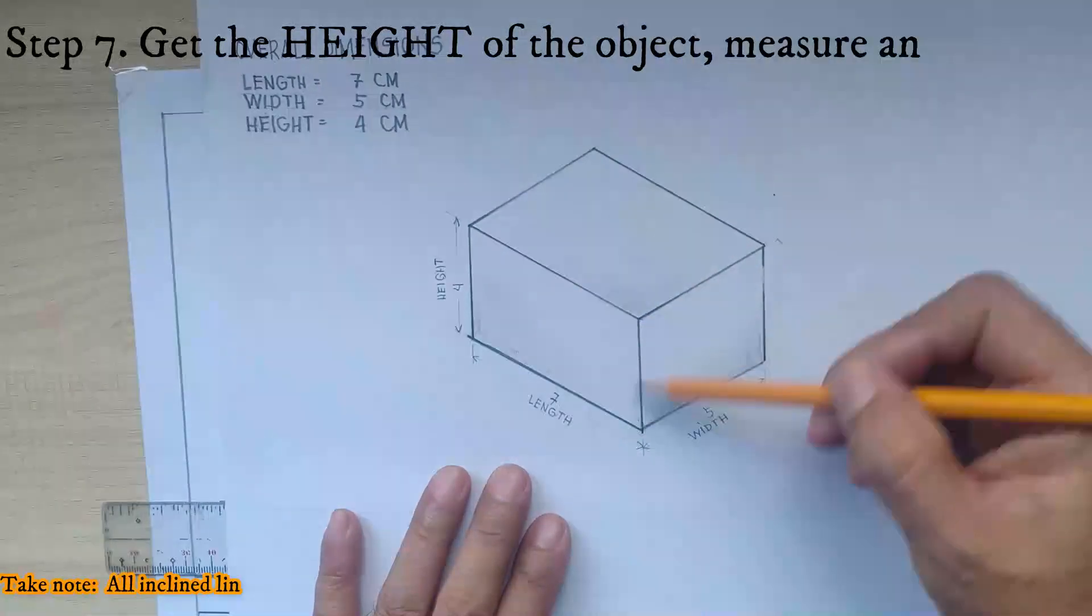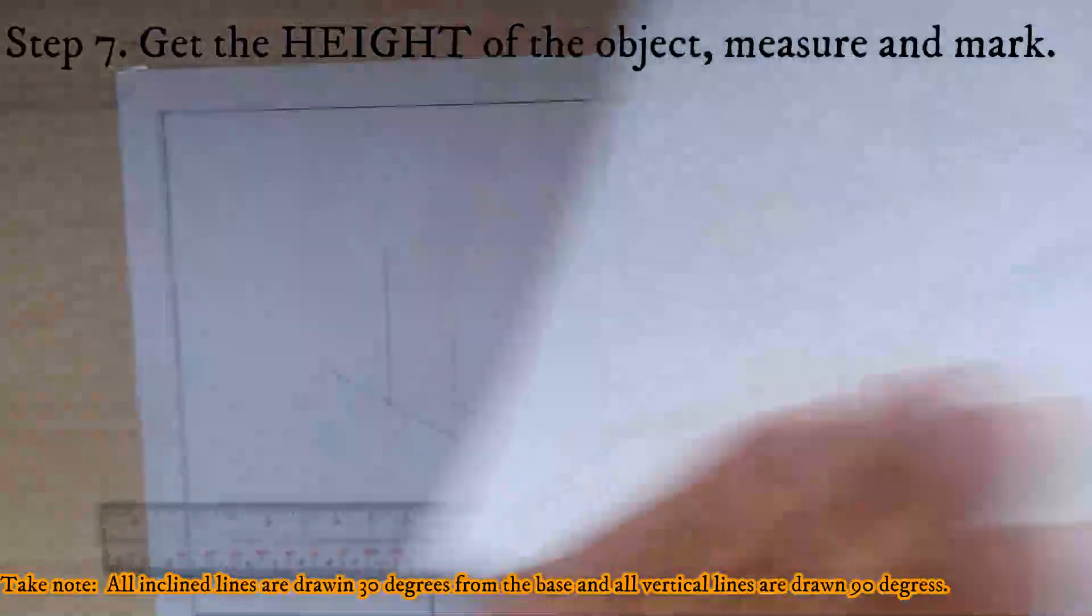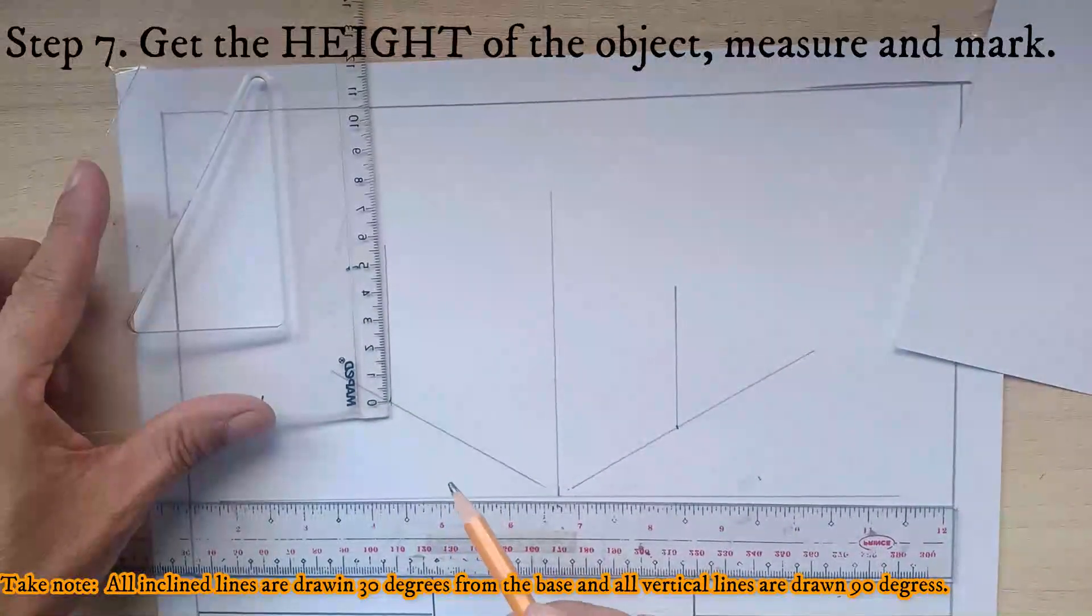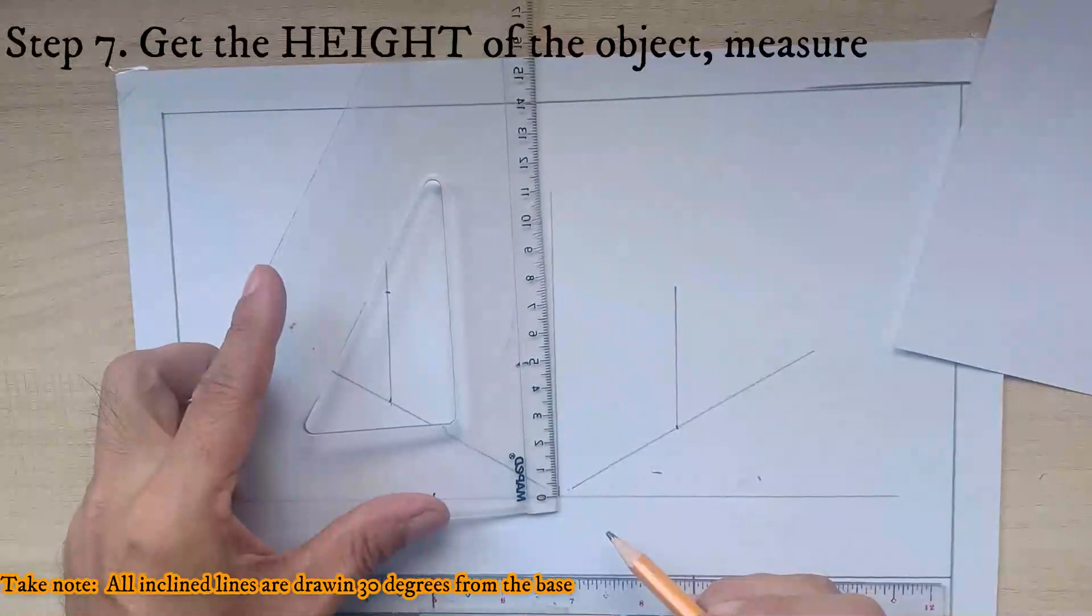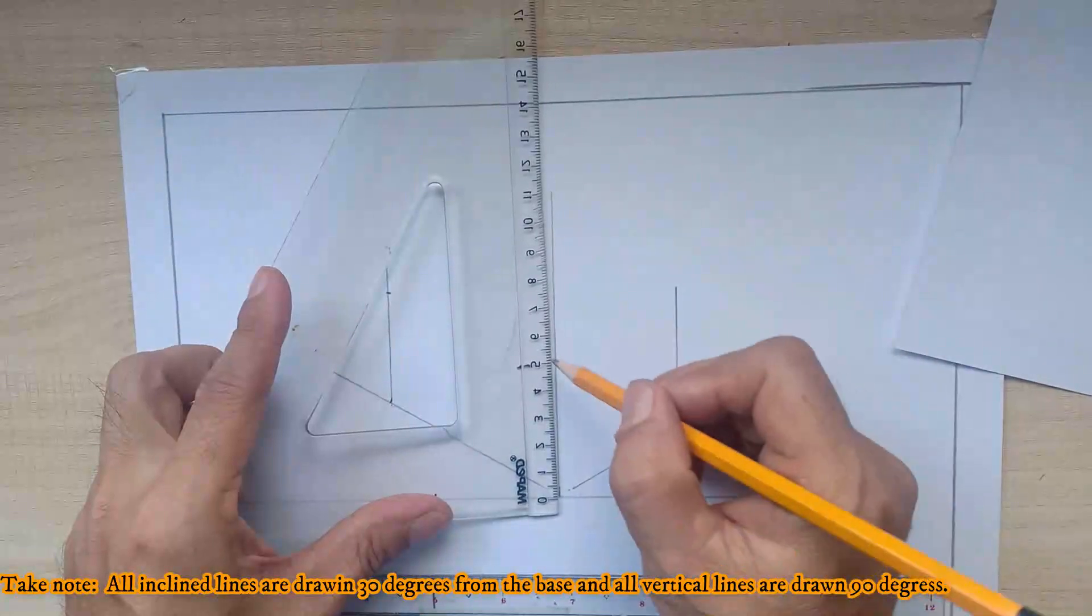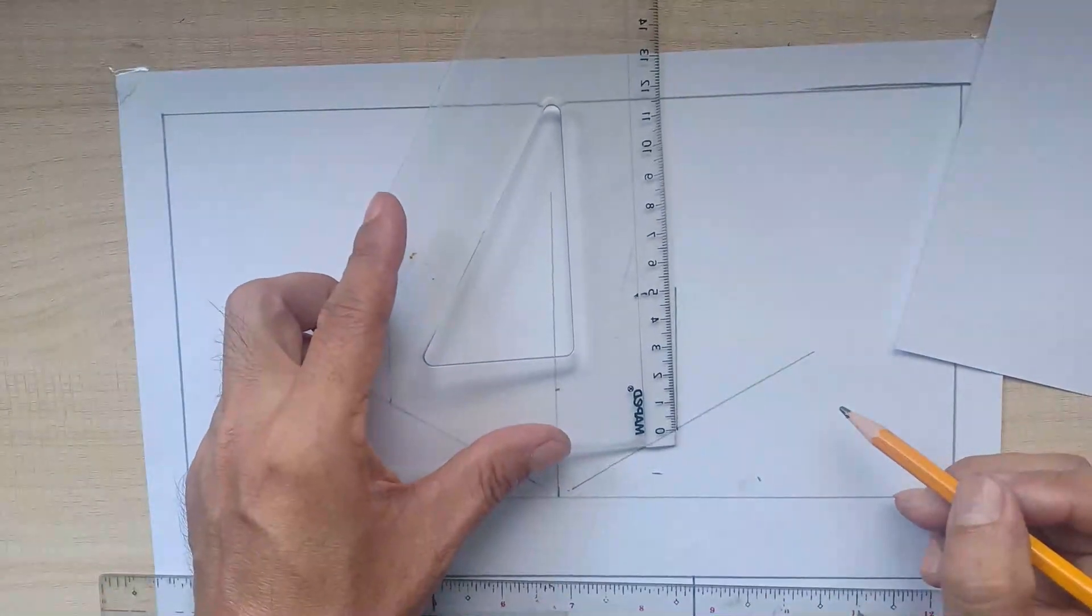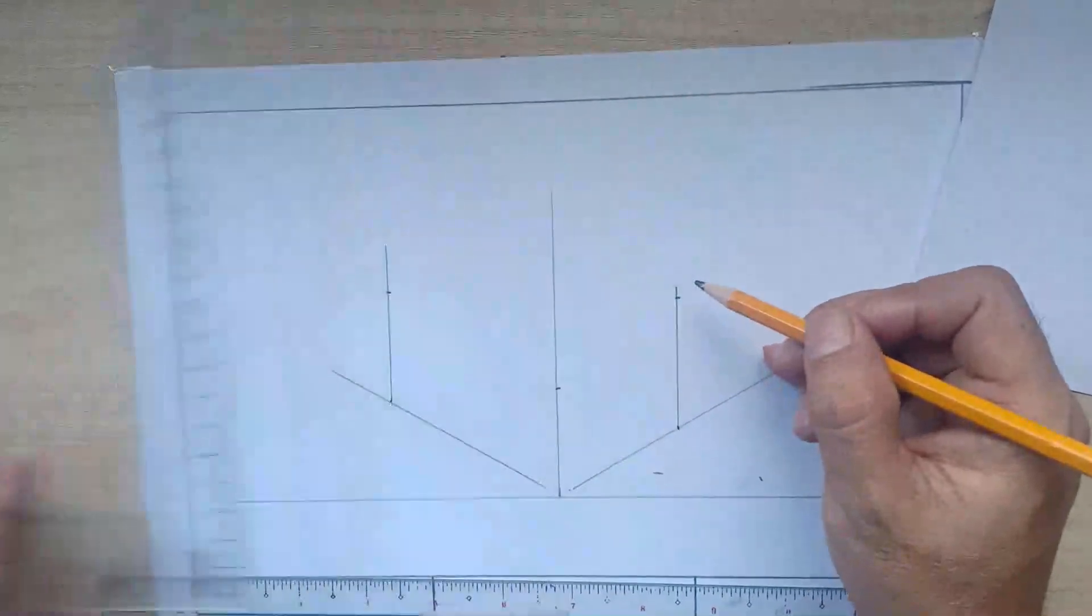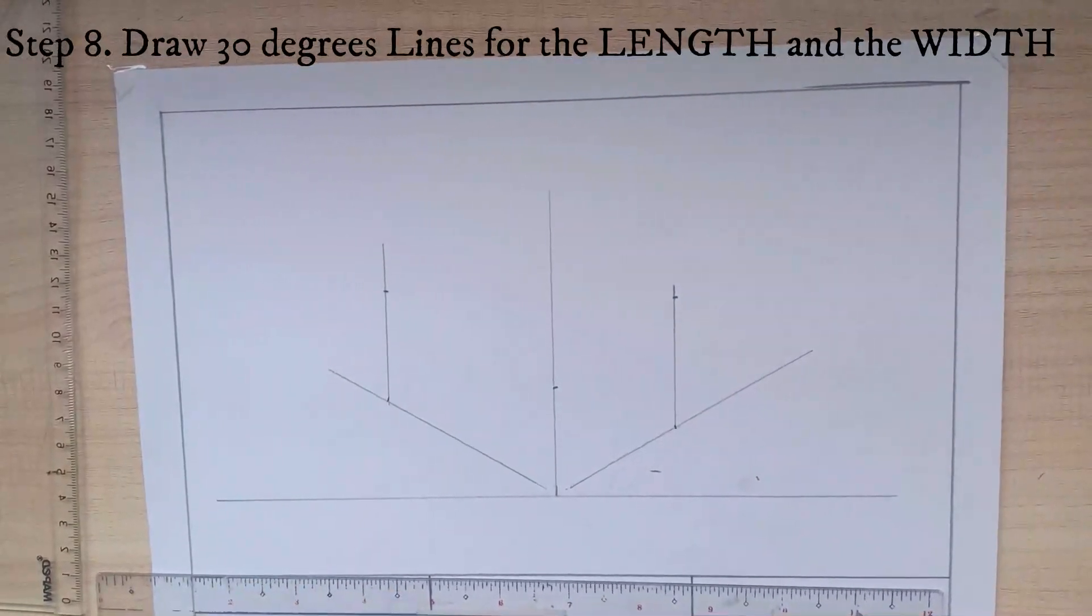To draw the next line, know that the height of the object is 4 cm. Then measure the height which is 4 cm and mark. Put a mark on the 4 cm point.